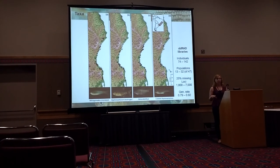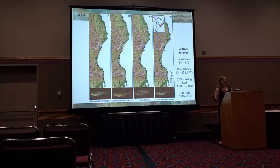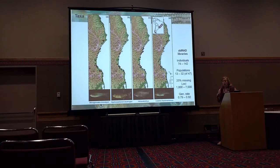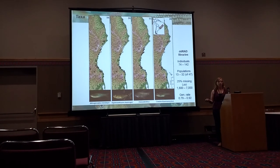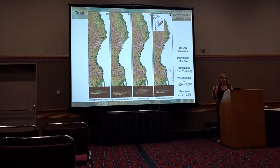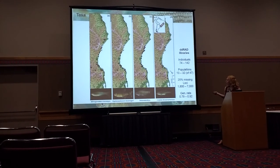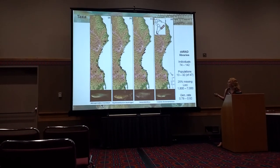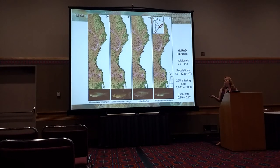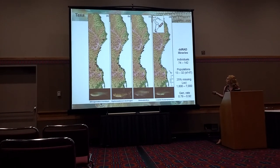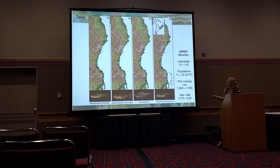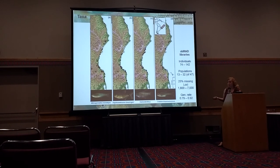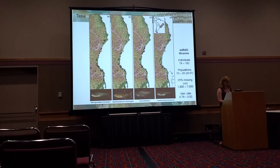Then I checked for spatial and temporal congruence between these species. I applied different methods and methodologies. To give you an idea, I have different datasets with varying amounts of missing data, but at the 25% missing data threshold I have around 1,800 to 7,000 SNPs for the analyses I'm going to show.